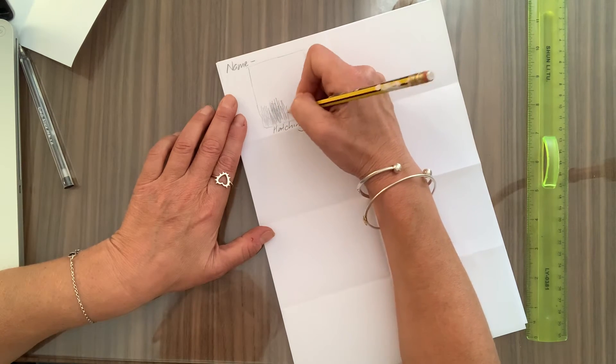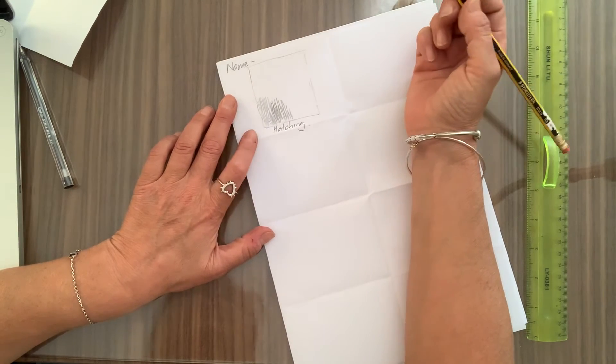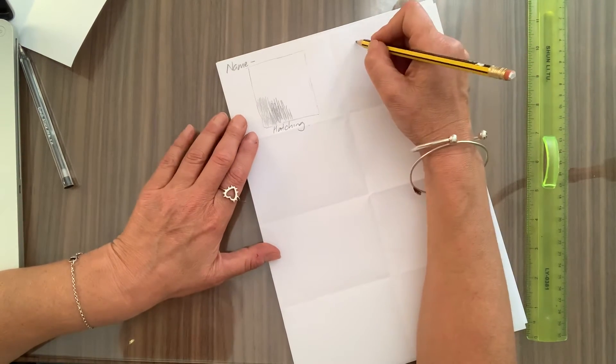So you're going to show me how you can hatch. Cross hatching. That's the next one. So I'll draw my next square.